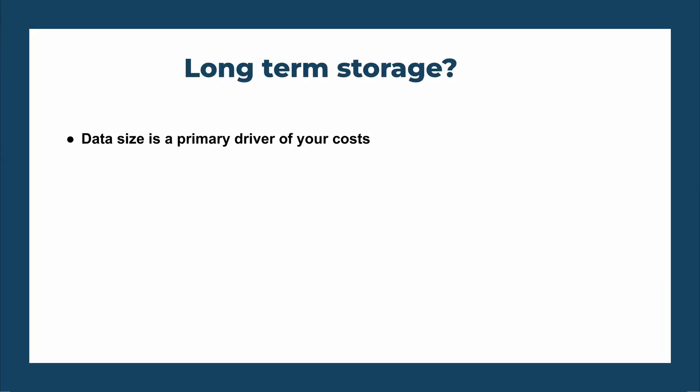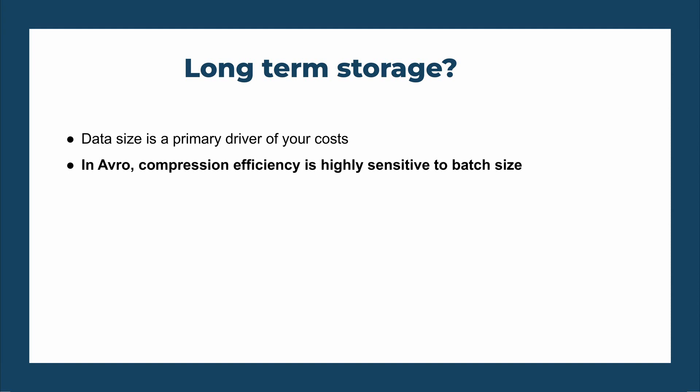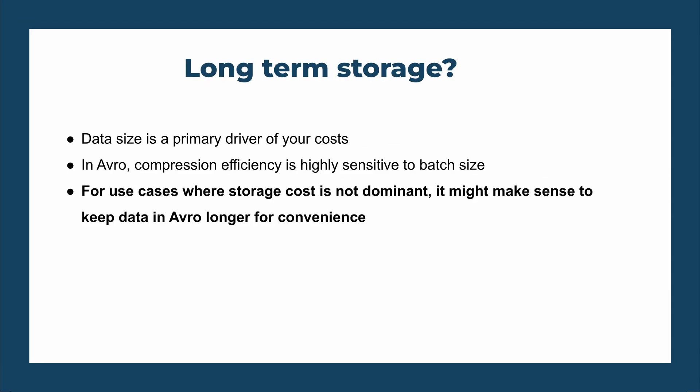Why is that important? When thinking about long-term storage for your historical data, the data size is the primary driver of your costs. On top of that, in the benchmark the whole data set was serialized at once. When working with Kafka producers, your compression efficiency is highly sensitive to batch size — the difference between no batching and large batches can be four times the difference in file size. And increasing batch size usually means increasing latency, which might not be acceptable in your operational applications. This means that if you want to keep your data for long-term storage, Parquet is a clear winner. However, if your application doesn't work with a large volume of data and storage cost is not significant compared to development cost, it might make sense to keep your data in the operational plane longer to simplify your architecture.